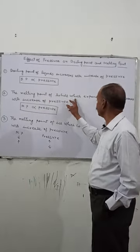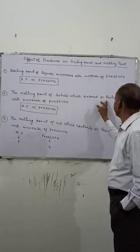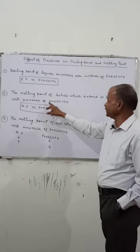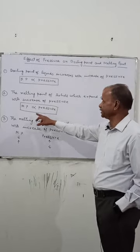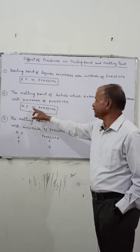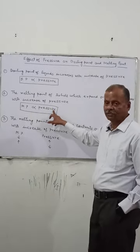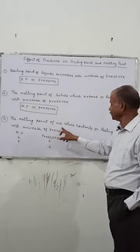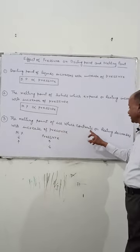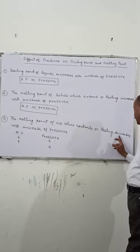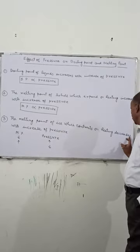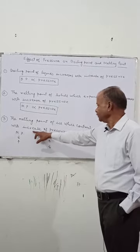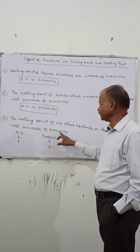The melting point of solids which expand on heating increases with the increase of pressure, so melting point is proportional to the pressure. The melting point of ice, which contracts on heating, decreases with the increase of pressure.